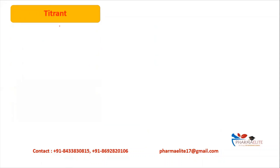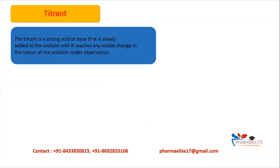The next term is titrant. A titrant is a strong acid or base whose concentration is known to us. It is slowly added to the analyte until a visible change in color of the solution is observed. As soon as the change of color is observed, we stop adding the titrant to the analyte.